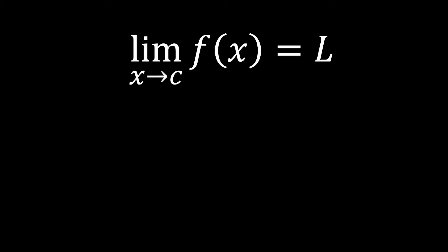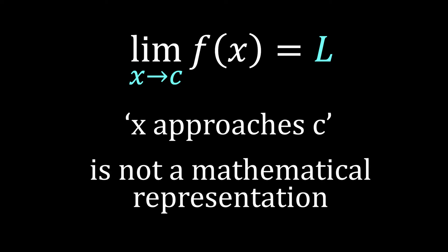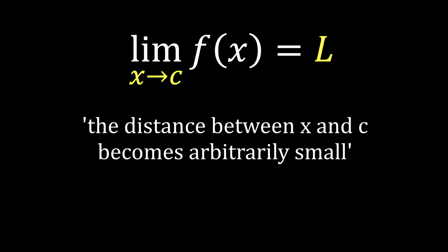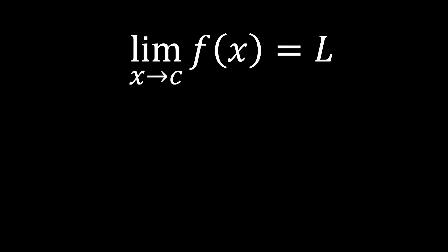This limit expression means that as x approaches c, f(x) converges to L. The expression 'x approaches c' is not a mathematical representation, so we'll use the phrase 'the distance between x and c becomes arbitrarily small' to describe it more intuitively. The distance between x and c is denoted as |x-c|, and for now, let's say |x-c| is pretty small.